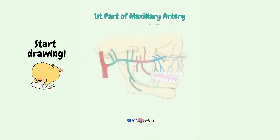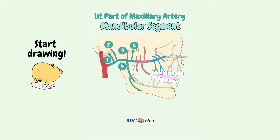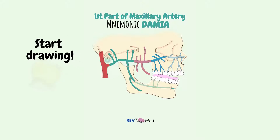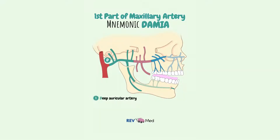The first part is the mandibular, which has five branches. For this we'll use the mnemonic DAMIA. D is for the deep auricular, which passes through the external acoustic meatus. A is for the anterior tympanic artery, which enters the squamotympanic fissure.